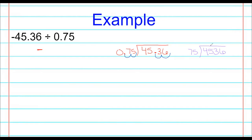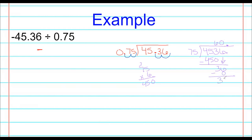75 can't go into 4, can't go into 45, but 75 can go into 453 — six times. Let's do the work. 6 times 75 is 450. We subtract and get a remainder. Remember to put the decimal point up above — I usually do it in step four rather than step three. 75 cannot go into 36 at all, so we put a 0 and bring down another zero, because it's important to place that 0 since 75 does not go into 36.